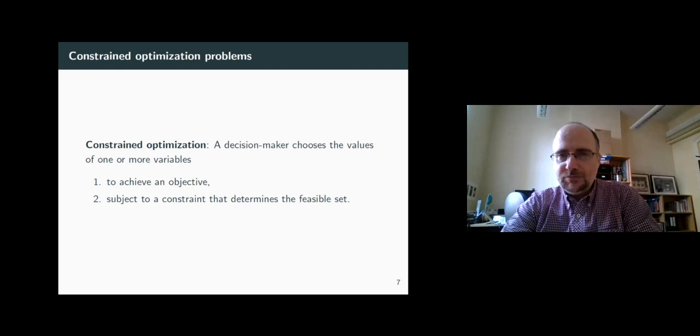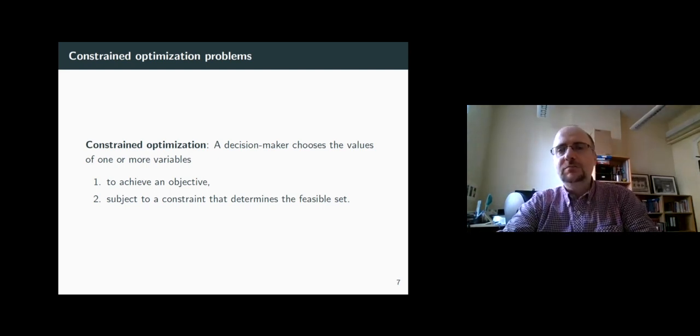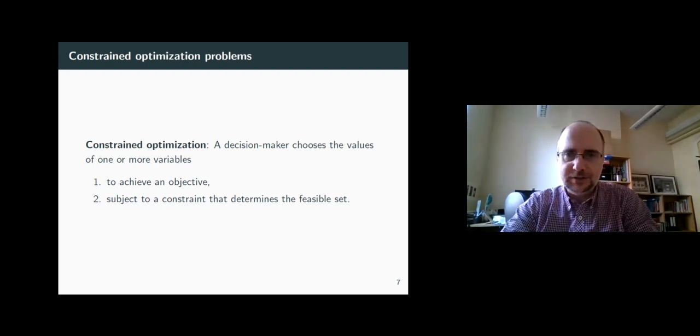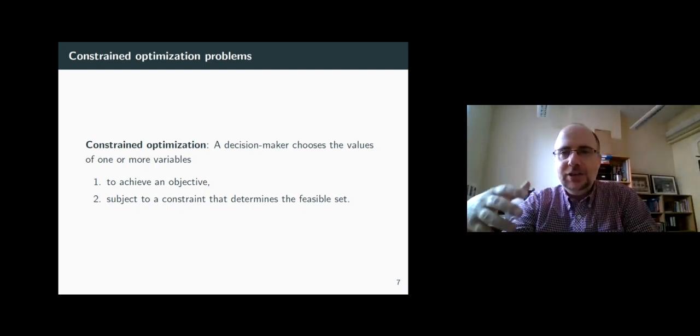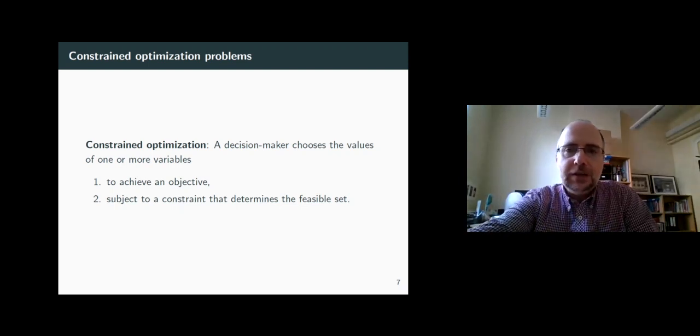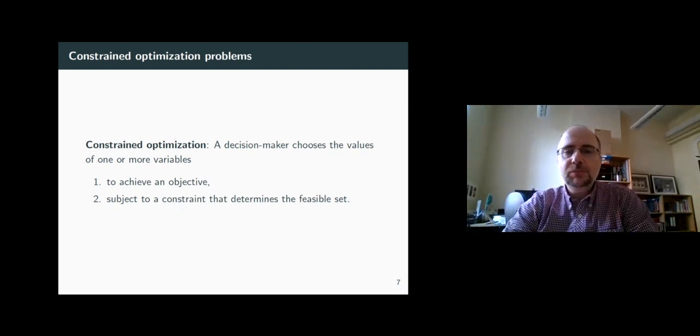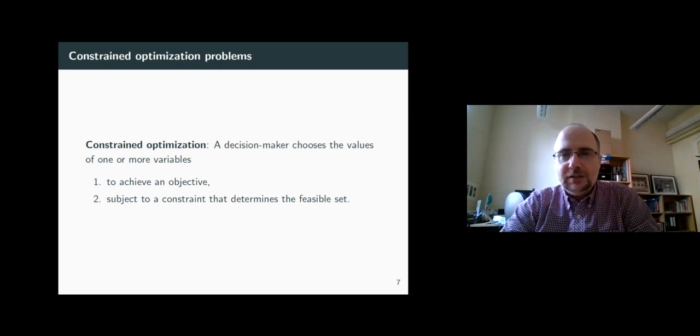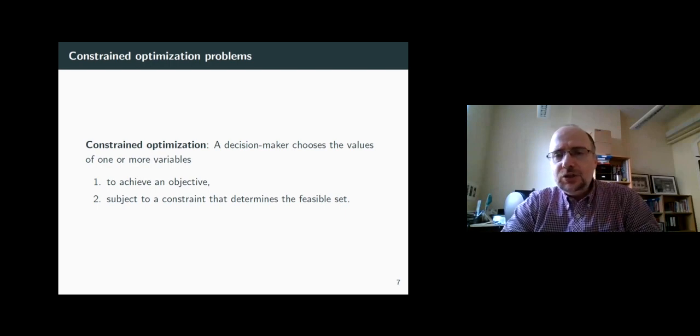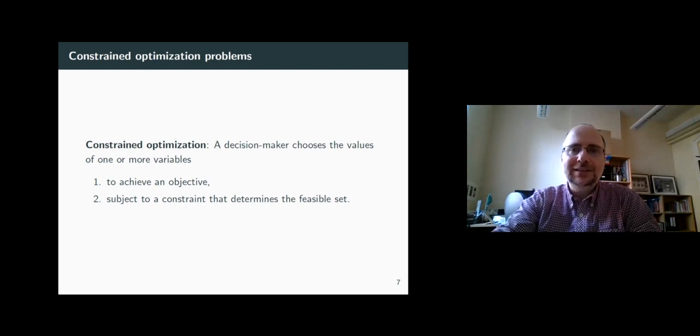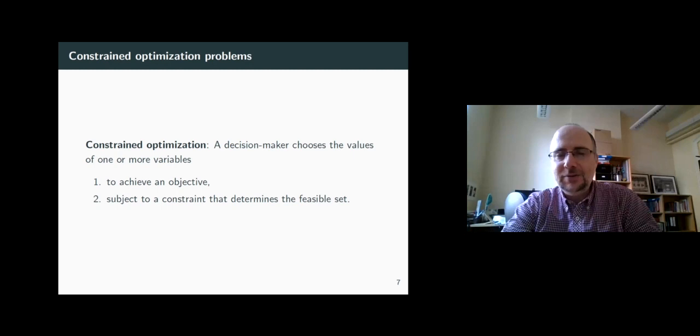We've seen a few examples of constrained optimization problems earlier when we talked about consumers maximizing utility subject to a certain budget constraint. Now, the firm is doing exactly the same from a conceptual standpoint. The firm is acting like an economic agent who chooses something in order to achieve an objective. The objective is to maximize its profit. But profit is derived from selling goods to a marketplace, which does not have an infinite buying power. So that's what constrains the firm, the demand for its products. Ultimately then, the firm is choosing its price and output to maximize its profit, subject to a certain demand constraint.